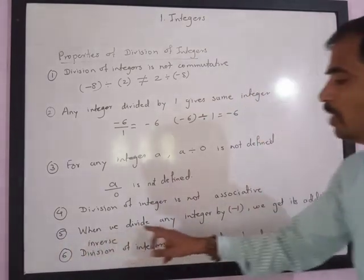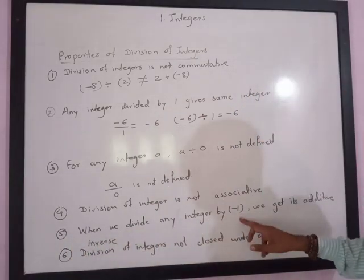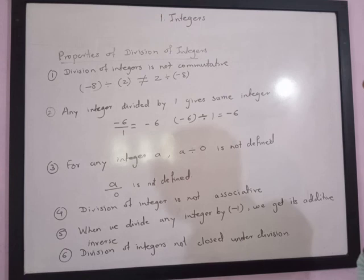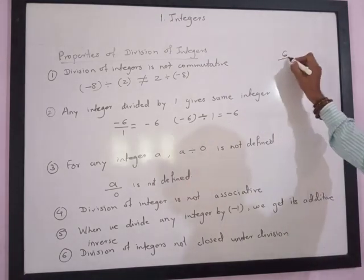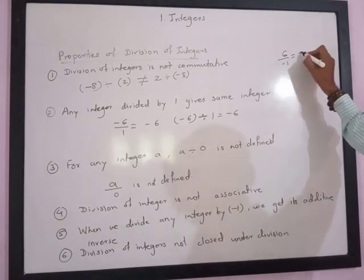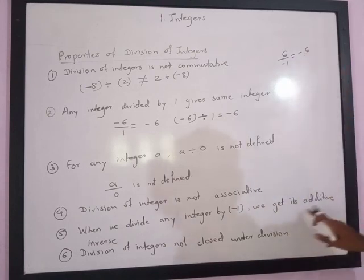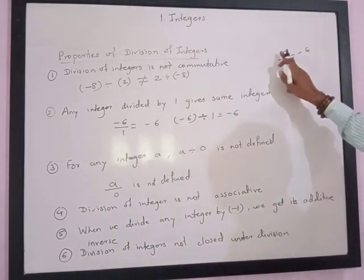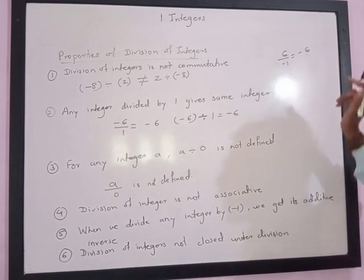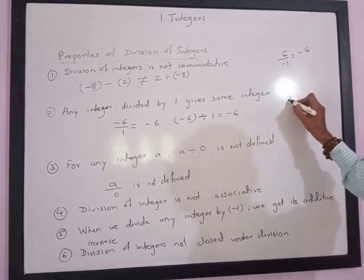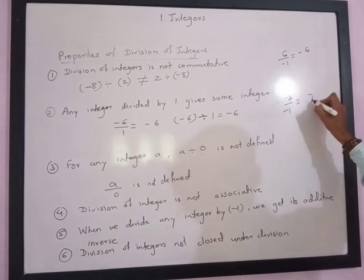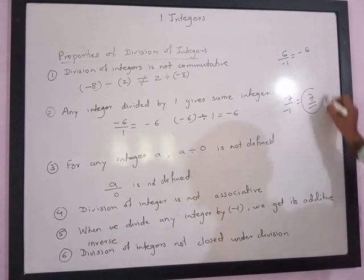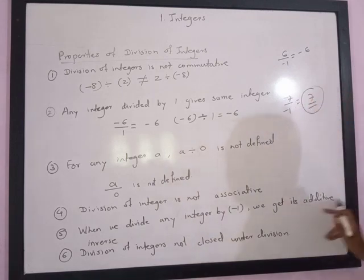The fifth property is that when we divide any integer by negative 1, we get its additive inverse. For example, 6 divided by negative 1 gives negative 6, and 6 and negative 6 are additive inverses. Similarly, negative 7 divided by negative 1 gives positive 7.